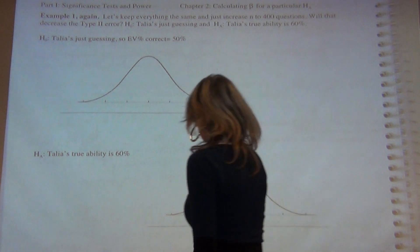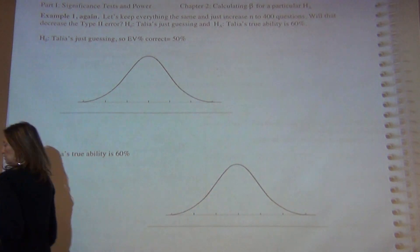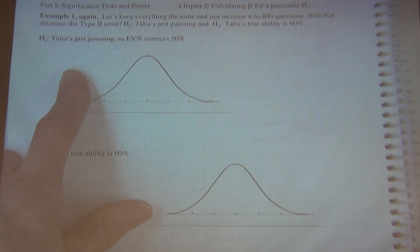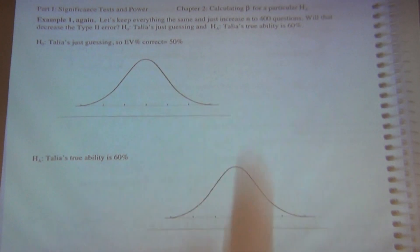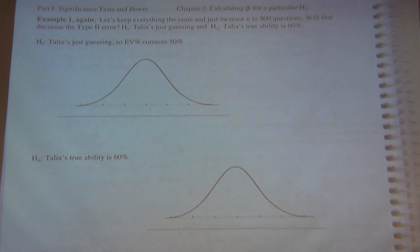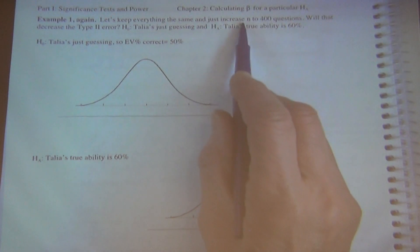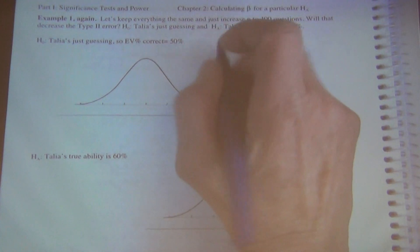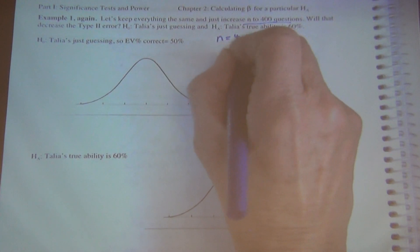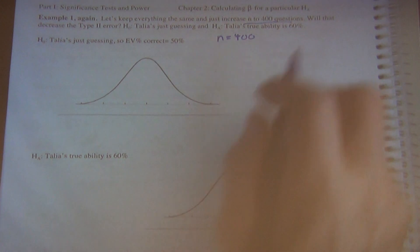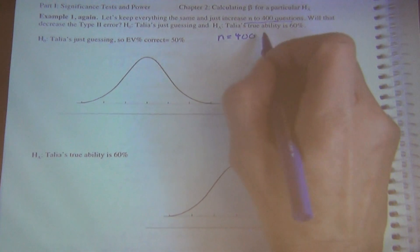Now we're going to work out exactly that example. Let's keep everything the same — we're just going to increase n to 400 questions. We're doing the same exact example, but now n is 400 instead of 100. That's the only thing we're going to change.